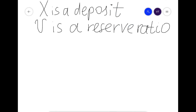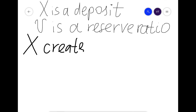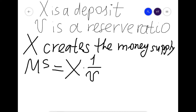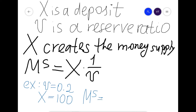What we have found is a general result. If X is the new deposit and V is the reserve ratio, then X creates a money supply equal to X × (1/V). In our example, V was 0.2 and X was $100, so money supply equaled X × (1/V) = $500.